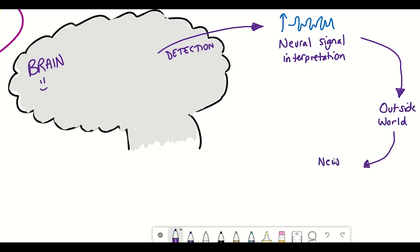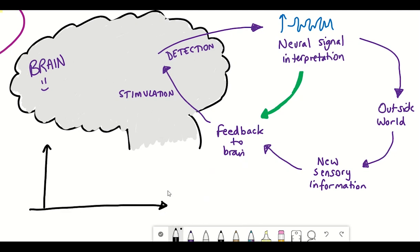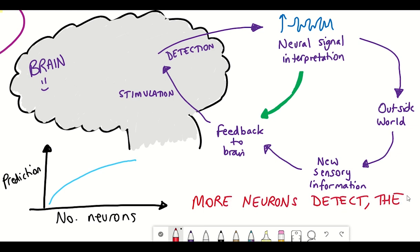that new sensory information can be fed back into the brain to stimulate the neurons. And so this interpretation of the signal can either happen in the outside world or it could happen on chip. That means happening on the device such that there isn't a need for an external interaction between the device and some other device, whether it's a computer or a phone. And so the more neurons that can be detected by the devices, the better the predictions can be. And therefore, the better and more effective the stimulation and feedback to the brain can be.